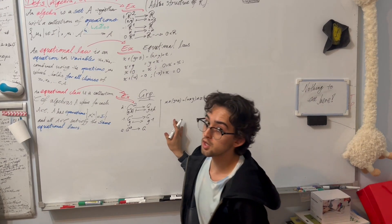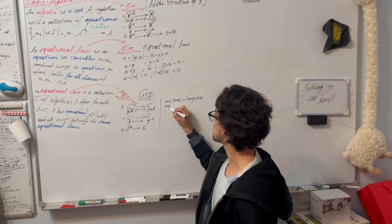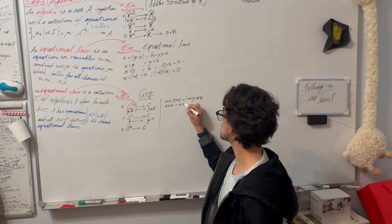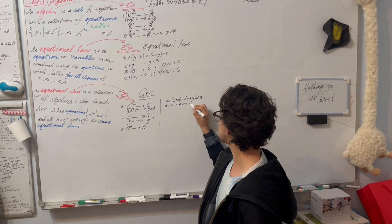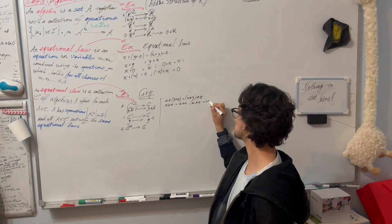Not only do we have associativity, we also have that e acts as an identity, so that x star e is the same as e star x, and that x star e is equal to x.